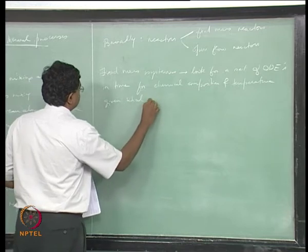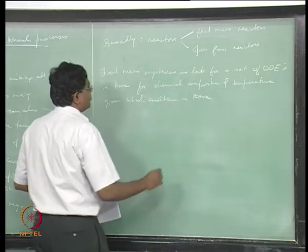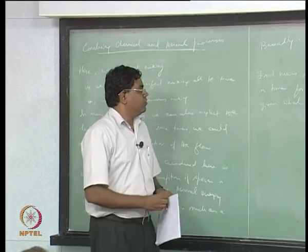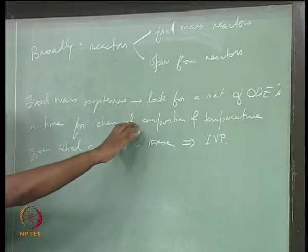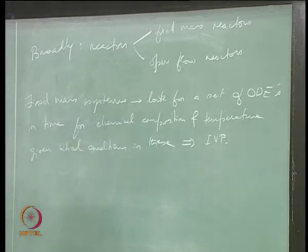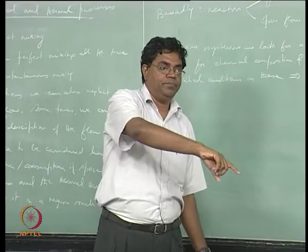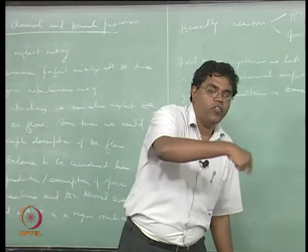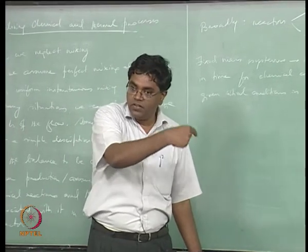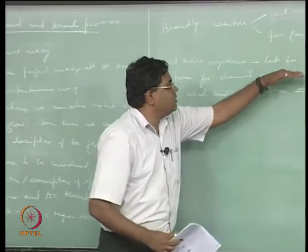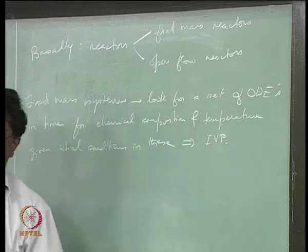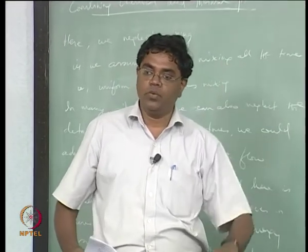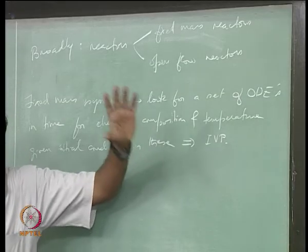Given initial conditions, this is an initial value problem. The net rate of production of each species depends on concentrations of many other species and on temperature. Similarly, the rate of change of temperature involves rates of production of other species, which in turn depend on other concentrations. You are now looking at a coupled set of ODEs where each equation has variables present in most of the other equations — so you must solve all equations simultaneously.